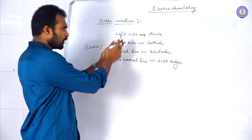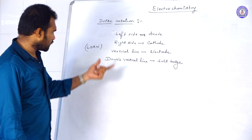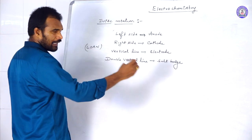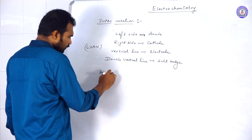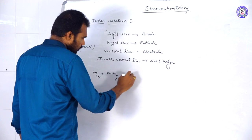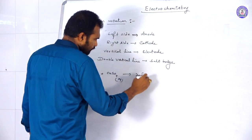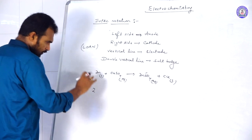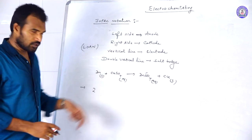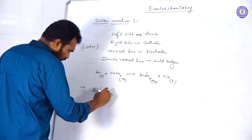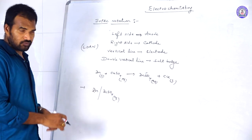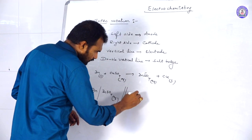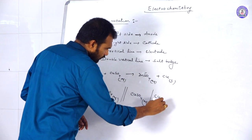Left side always represents the anodic reaction, right side always represents the cathodic reaction. A single vertical line indicates an electrode, and a double vertical line indicates a salt bridge. For example, for the reaction: zinc solid plus CuSO₄ aqueous gives ZnSO₄ aqueous plus copper solid — you write: Zn | ZnSO₄(aq) ‖ CuSO₄(aq) | Cu(s).